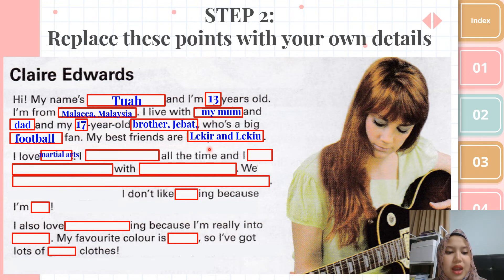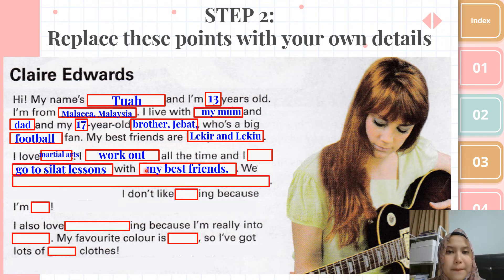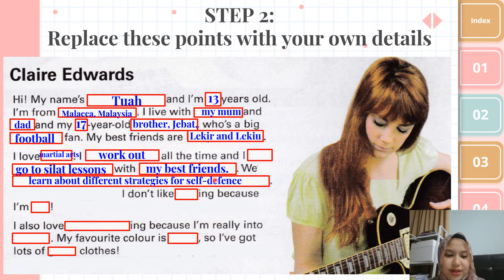Then, 'I love martial arts.' Explain a bit — what do you do exactly in martial arts? And with who? For example: 'I work out all the time and I go to silat lessons with my best friends.' Because this person likes martial arts, they go to silat class with their best friends. So tell me what you do with the thing you like, and explain it a bit more — like 'We learn about different strategies for self-defense.'